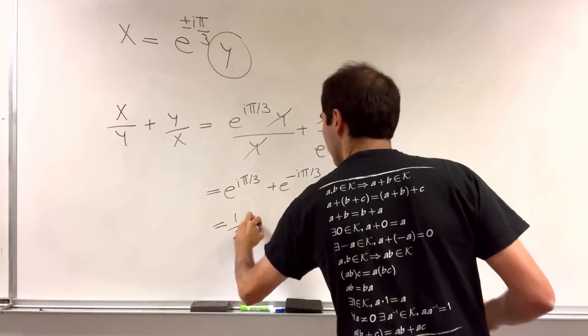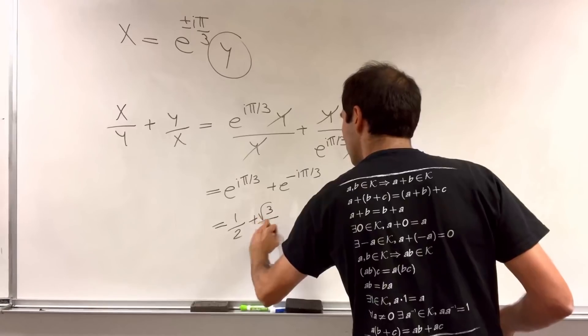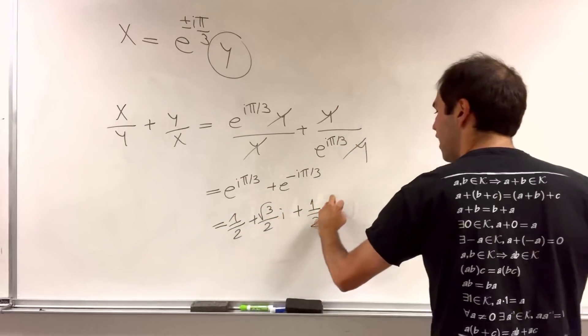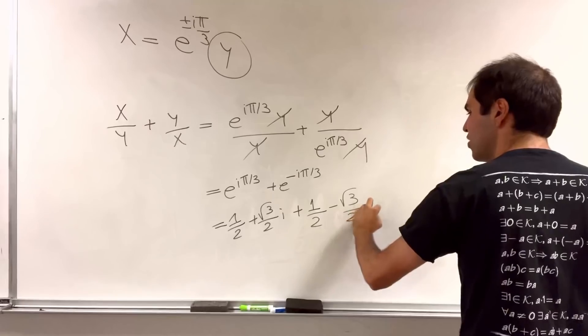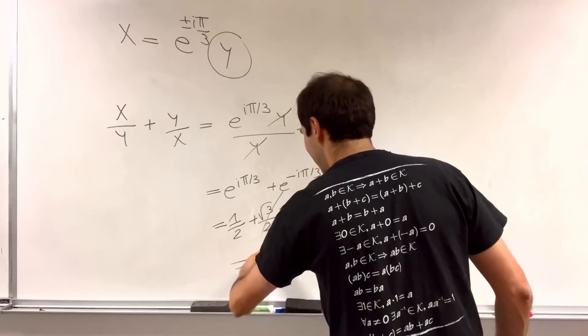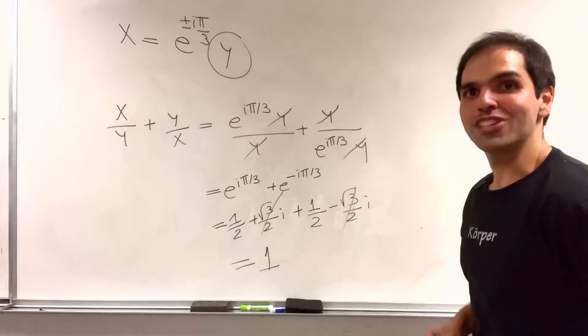Which is 1 half plus square root of 3 over 2i, plus 1 half minus square root of 3 over 2i. The evil imaginary parts cancel out, and you get 1 half plus 1 half, which is 1.